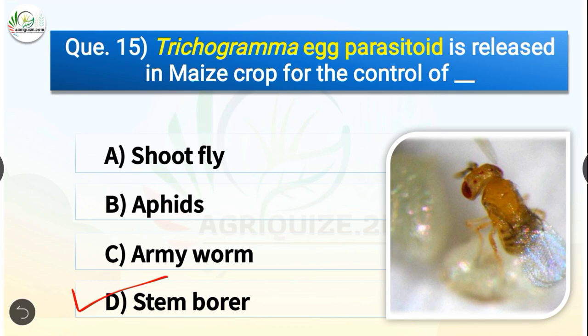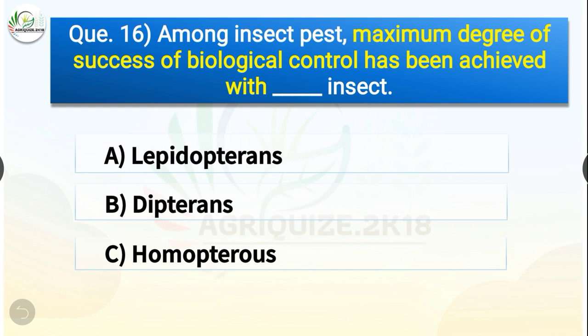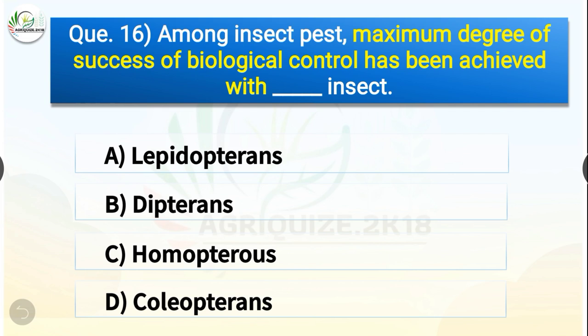Question number sixteen: Among insect pests, maximum degree of success of biological control has been achieved with dash insect. The options are Lepidopterans, Dipterans, Homopterans, or Coleopterans. The correct answer is option C — Homopterans. Among insect pests, maximum degree of success of biological control has been achieved with Homopteran insects.